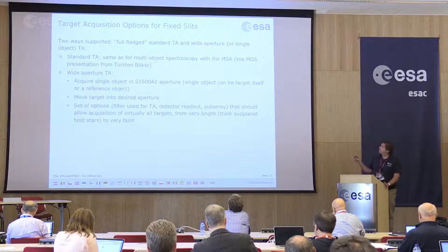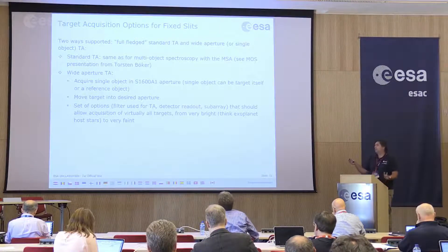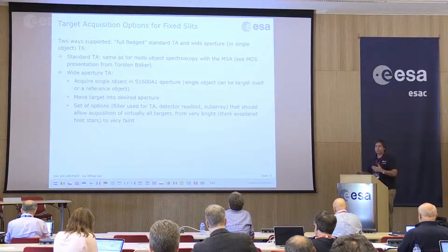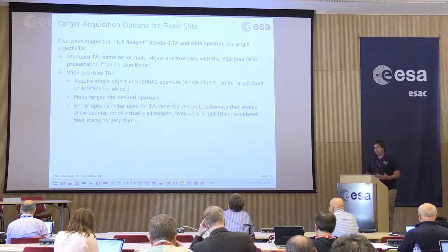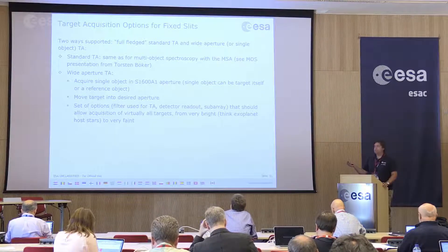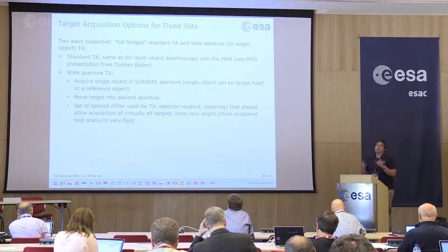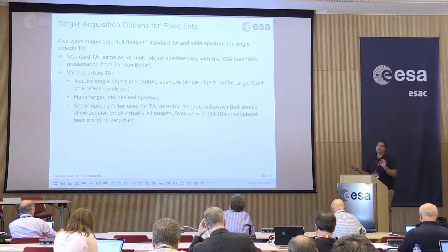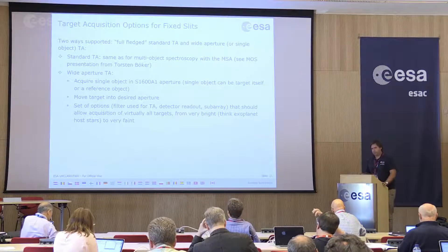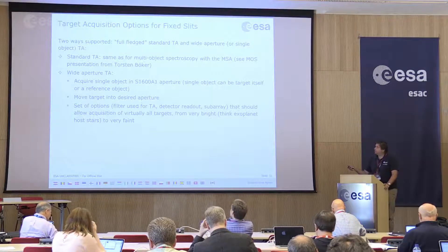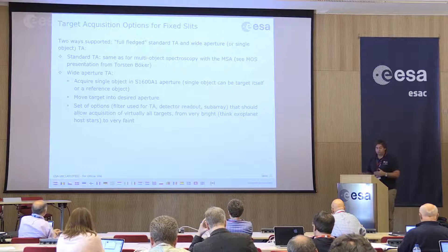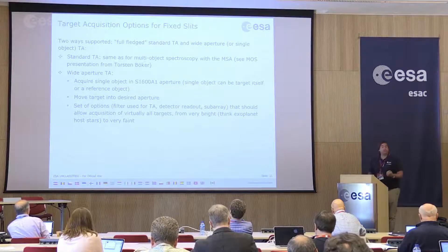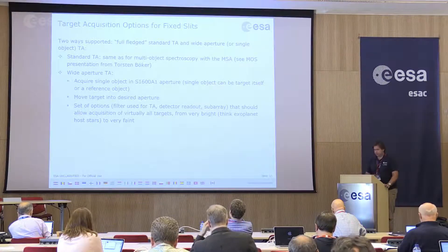For target acquisition, what is foreseen to be supported is the so-called standard TA, which is quite complex — you have a set of reference stars and can put an object into any aperture. The second method uses the large 1.6 arcsecond square aperture, where you place either your science or reference target and then offset to the slit you want to use. Three different target acquisition filters and different readout patterns are available, and there will be tools to help observers make the right choice.